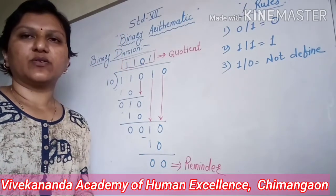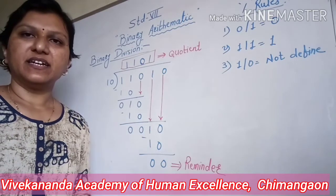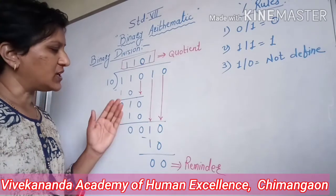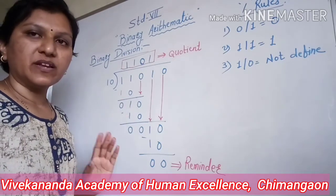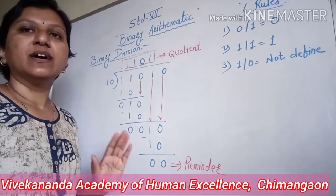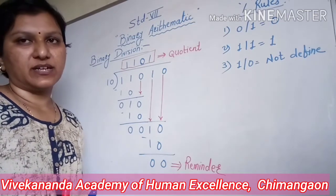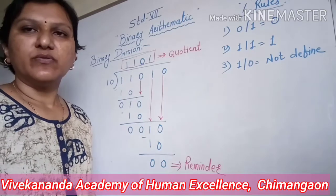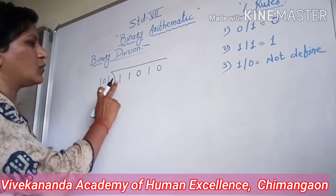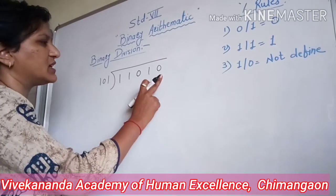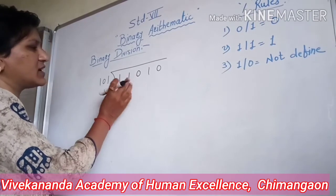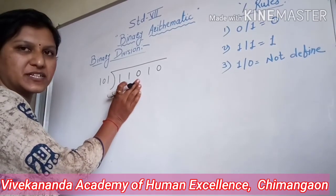This is how we perform the binary division operation — it is like a regular decimal division, except that whenever we perform subtraction, we follow the rules of binary subtraction. Now moving to the second example: 11010 divided by 101. As the divisor has 3 digits, we are going to consider the first 3 digits of the dividend.